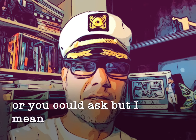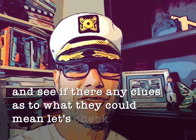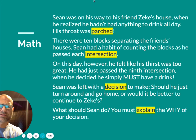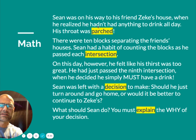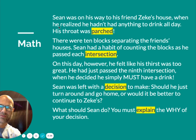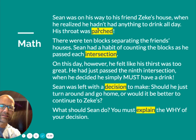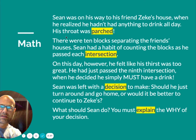In a minute you'll see a video of me reading you a story that you've already seen on the board. Perhaps I already read it to you, or you may have read it to yourself. The main idea is for you to really think about why you think Sean should either go forward to his friend Zeke's house or return home in order to get a drink.